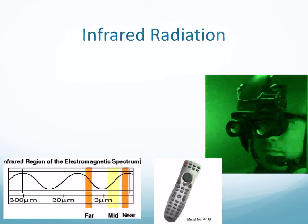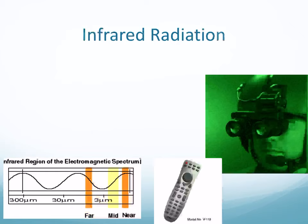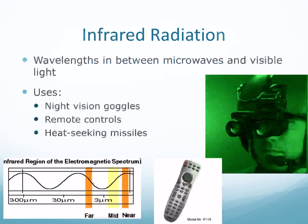Infrared radiation is what we think of as heat radiation — all of you are giving off infrared radiation from your body heat. Infrared wavelengths fall between microwaves and visible light. Uses include night vision goggles (you can see heat coming off people), TV remote controls, and heat-seeking missiles.